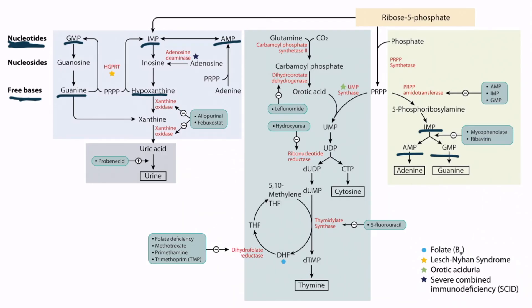Notice that the conversion of guanine and hypoxanthine back into GMP and IMP requires the enzyme hypoxanthine-guanine phosphoribosyltransferase or HGPRT. A deficiency of this enzyme results in Lesch-Nyhan syndrome. Also notice that adenosine deaminase converts adenosine to inosine, and a deficiency of this enzyme results in severe combined immunodeficiency or SCID. As adenosine metabolites accumulate in the cell, they are particularly toxic to T lymphocytes, which is why this is one of the causes of SCID.